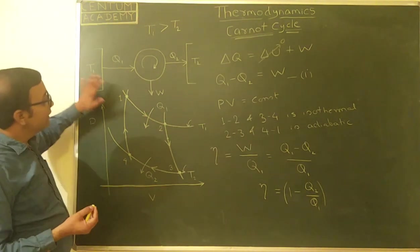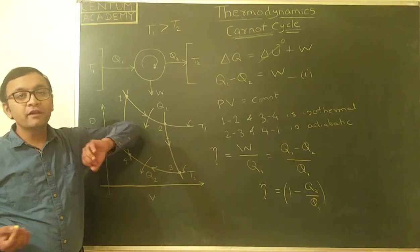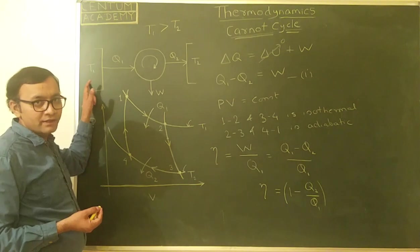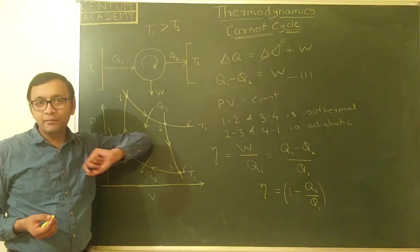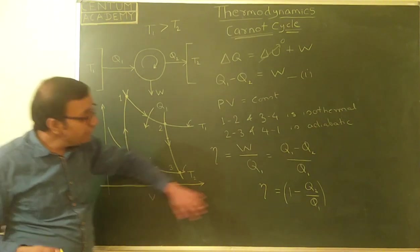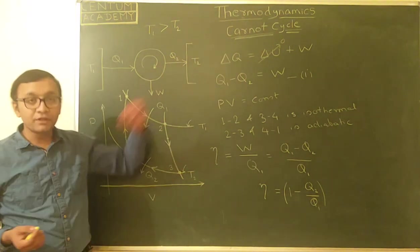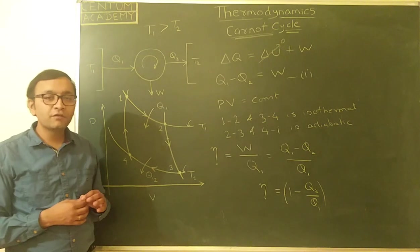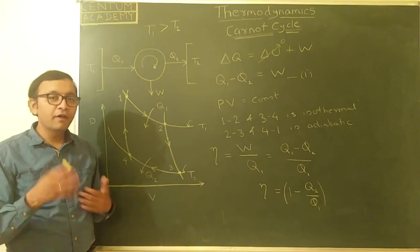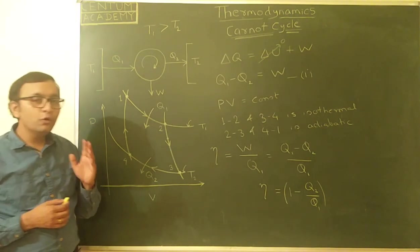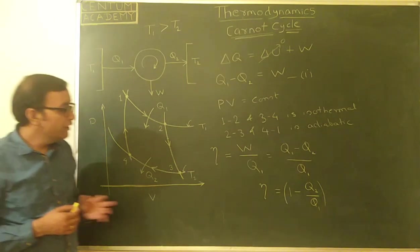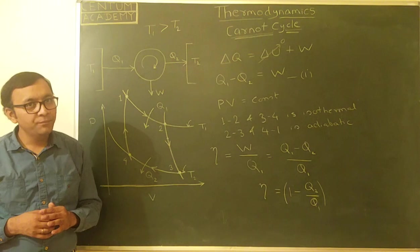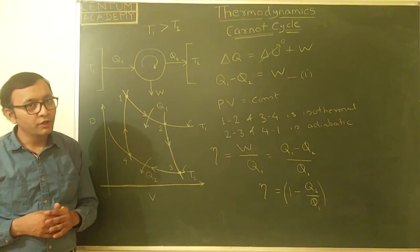The problem is that Q1 and Q2 are very difficult to measure directly. What is typically given are the temperature of the flame inside the cylinder and the surrounding temperature. So we want to express efficiency in terms of temperature — then we can find the efficiency of the Carnot cycle directly if we know T1 and T2. To achieve this, we need to find Q1 and Q2 in terms of temperature.